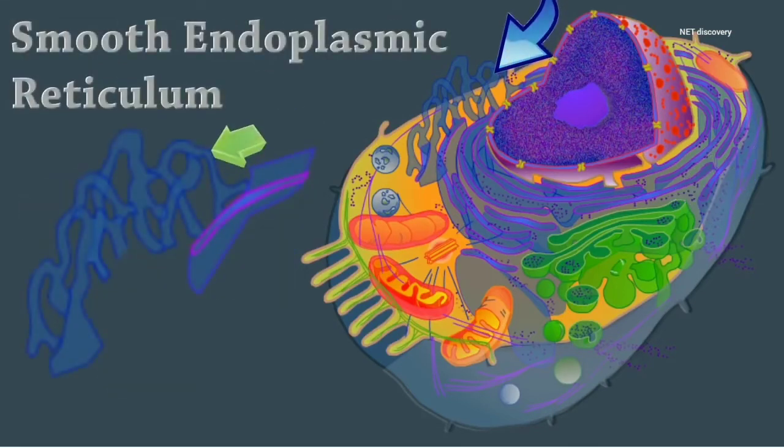The smooth endoplasmic reticulum is a membranous system of sacs and tubules that plays a part in several metabolic processes. It's free of ribosomes and synthesizes steroids, metabolizes lipids, and detoxifies drugs.